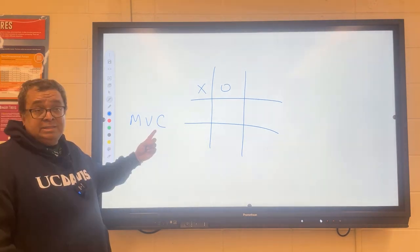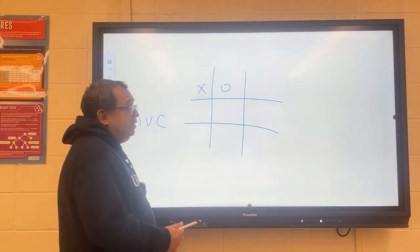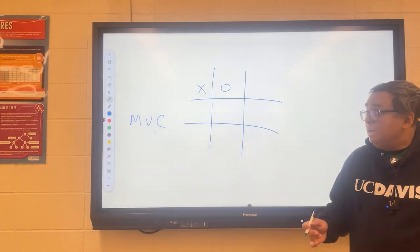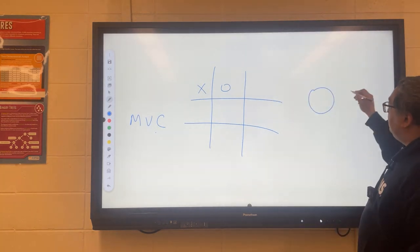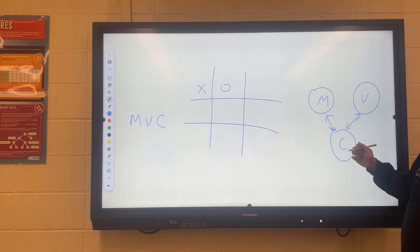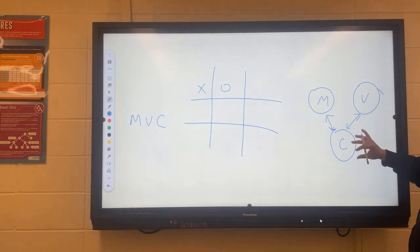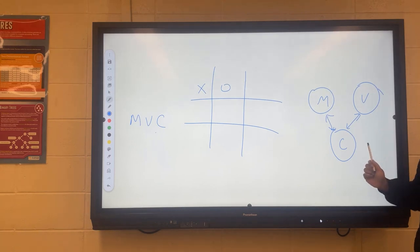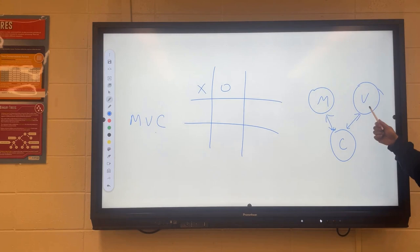This is just one way of looking at it. These represent groups of classes that might be sitting in here. You notice that the model and the controller talk to each other directly, and the view and the controller talk to each other directly.